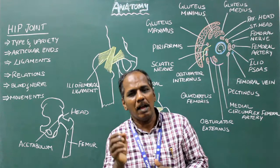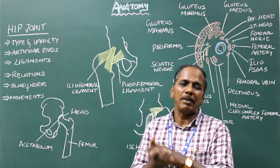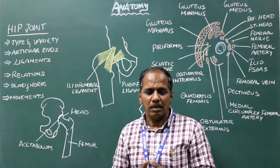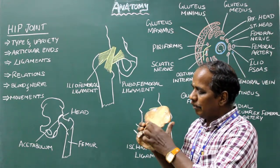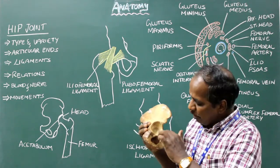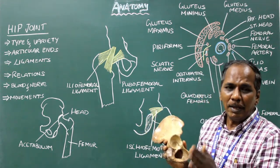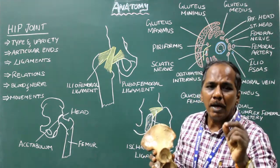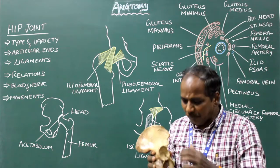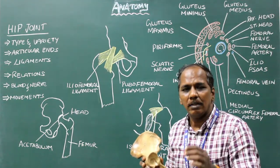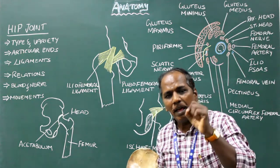The capsule is a loose fibrous sac which encloses the joint cavity. Its inner surface and the non-articular part of the joint are lined by synovial membrane. Proximally, the capsule is attached to the rim of the acetabulum and the outer margin of the transverse ligament of the acetabular notch. It is also attached proximally to the acetabular labrum, which is a fibrocartilaginous ribbon-like structure attached to the rim of the acetabulum. It increases the concavity and surface area of the acetabulum for articulation with the head of femur.